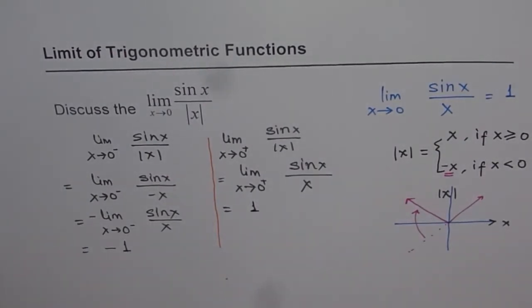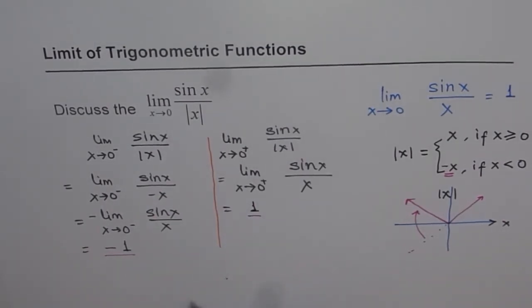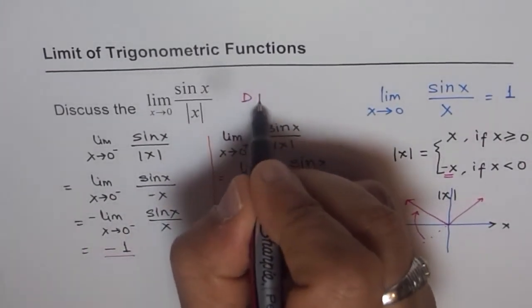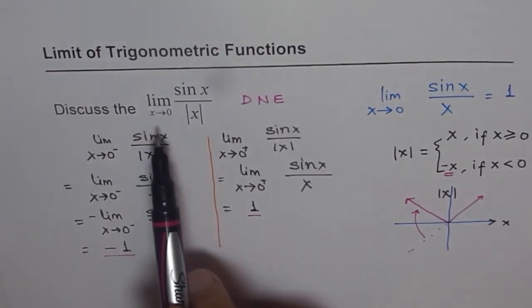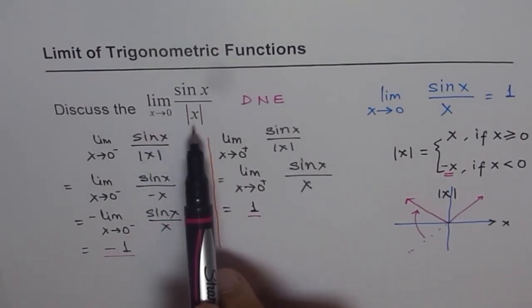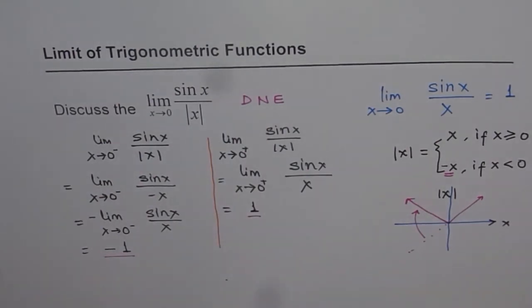Now, that means both the limits are not same. Do you see that? Since left side limit and the right side limits are not same, we say this does not exist. So, limit for sin x over absolute x where x approaches 0 does not exist. So, that is how you can show this and prove it.